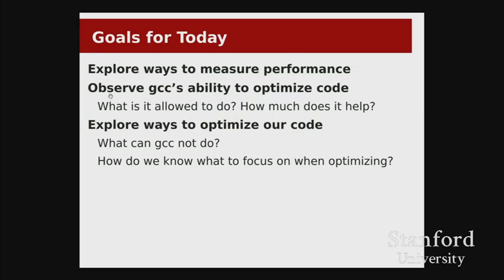Having gotten that understanding, we're going to look at two broad categories of optimizations. The first is what can the compiler do for us? There's a pretty broad set of things that GCC is just going to be able to help us with that we don't have to worry about. If it's something the compiler can get right, maybe we shouldn't twist our code into some bizarre state just to hypothetically get that optimization. Then there's a category of things the compiler is not going to be able to help us with, and I want to make sure we understand how to recognize those issues and how to find them in our code.